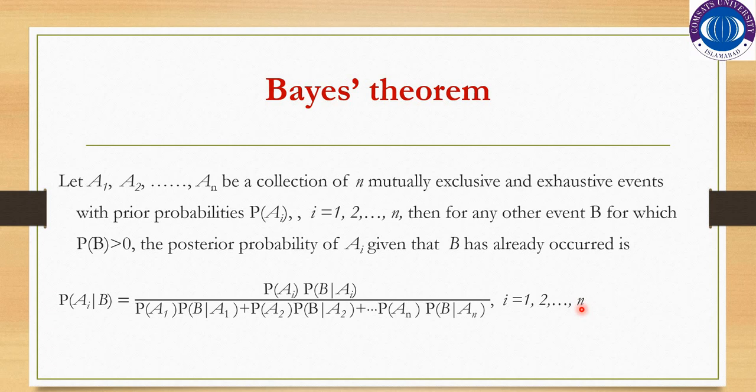यहाँ पे आप देखेंगे हमारे पास Bayes' theorem और जो total probability है उसमें क्या difference आ रहा है। हम similarity देखते हैं — दोनों की situation same है। हमने देखा कि total probability हम तब यूज़ कर रहे थे जब sample space हमारे पास mutually exclusive and exhaustive events में divided थी, and some other event was occurring in conjunction of these parts. यहाँ पे भी हमारे पास sample space mutually exclusive and exhaustive events में divided है and some event B is occurring in the conjunction of these parts.